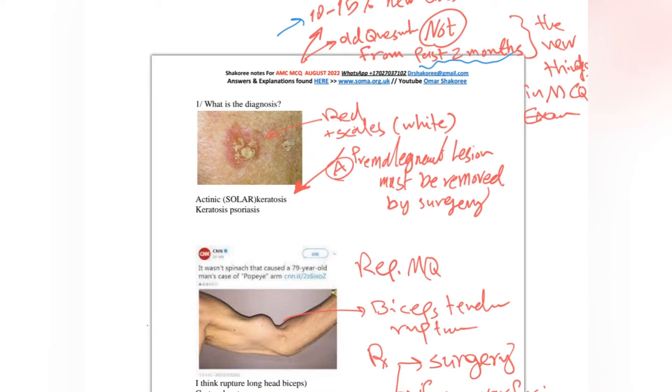Let's start with the first question. What's the diagnosis here in this lesion? As you see, it is red and there is whitish scales. This is absolutely solar keratosis. It is a redness lesion with white scales and this condition is a pre-malignant lesion and needs to be removed surgically.